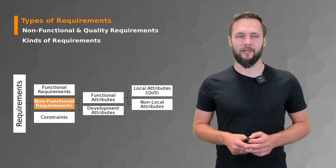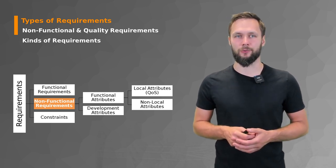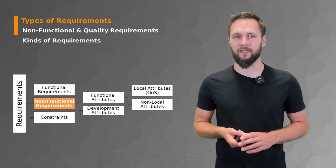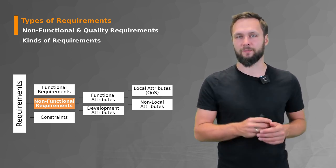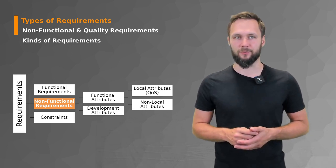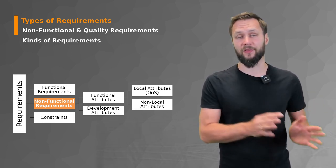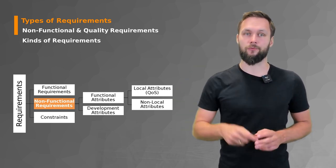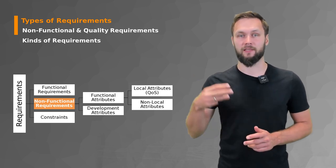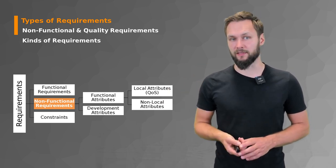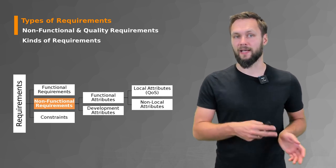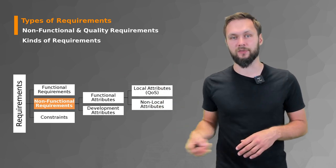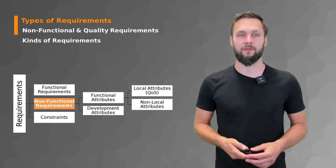Taking a slightly different perspective on how to categorize requirements, in addition to the data, behavioral, and functional perspectives for functional requirements, you can build something similar for quality requirements. These can be split into functional attributes and development attributes such as maintainability and portability, with functional attributes further divided into local attributes like performance and reliability, and non-local attributes like security and usability, among others.